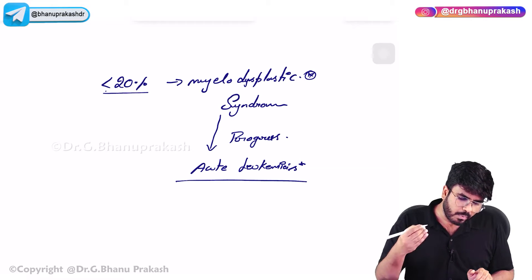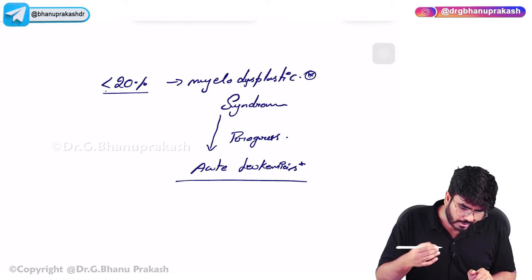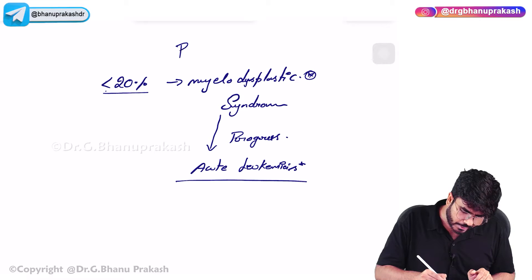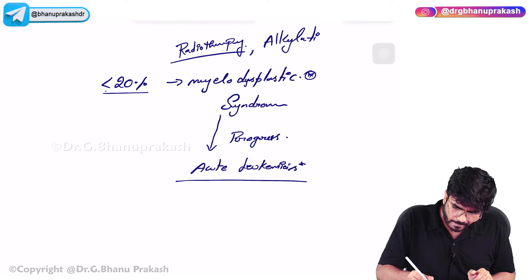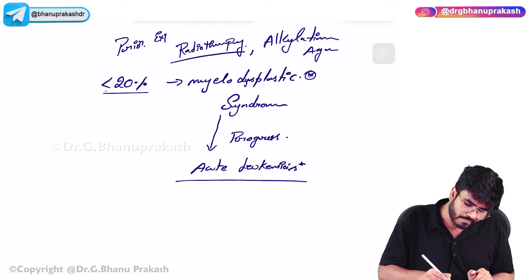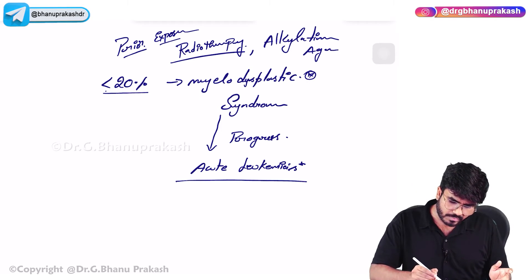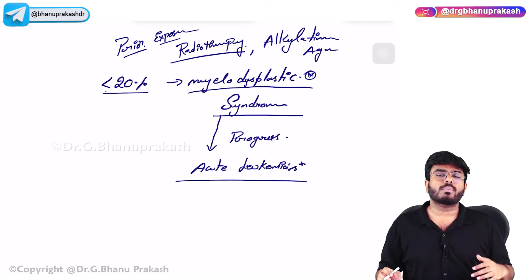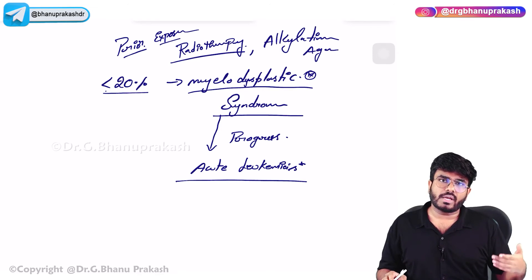Who will get myelodysplastic syndromes? Patients who are exposed to radiation or radiotherapy, or some alkylating agent - prior exposure to radiotherapy or alkylating agents. There is a possibility of myelodysplastic syndromes where the blast count is less than 20%, mild symptoms are seen, and in the future they can progress into acute leukemias.